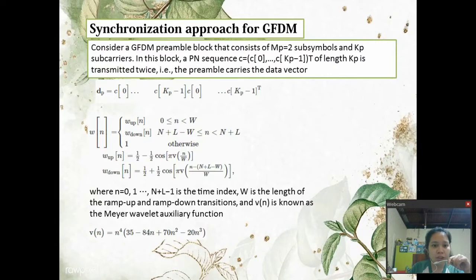For example, the preamble carries the data vector DP equals C of 0 up to C of KP minus 1 raised to T. The two repeated parts are extended by introducing smooth block boundaries in the preamble in order to control the OOB emissions. For this purpose, a special window with ramp up transition W sub up and ramp down transition is defined. As an example, the corresponding coefficients can be taken from a variation of the 2K pulse.